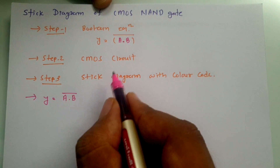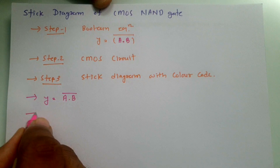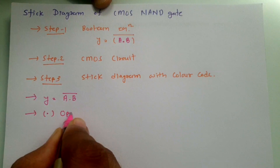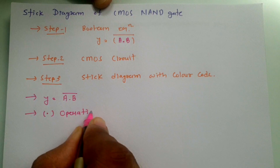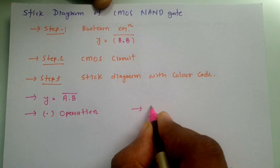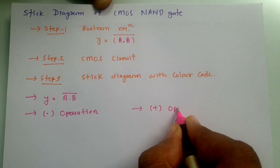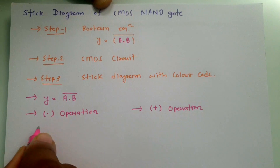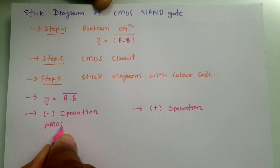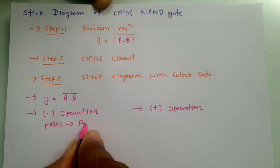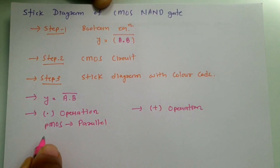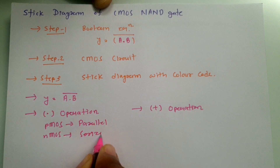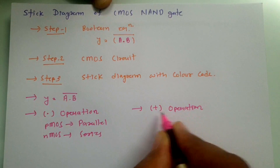Now we are dealing with the CMOS circuit for this equation. To form a CMOS circuit, there are two operations to observe: dot operation and plus operation. For dot operation, PMOS transistors are in parallel and NMOS transistors are in series.